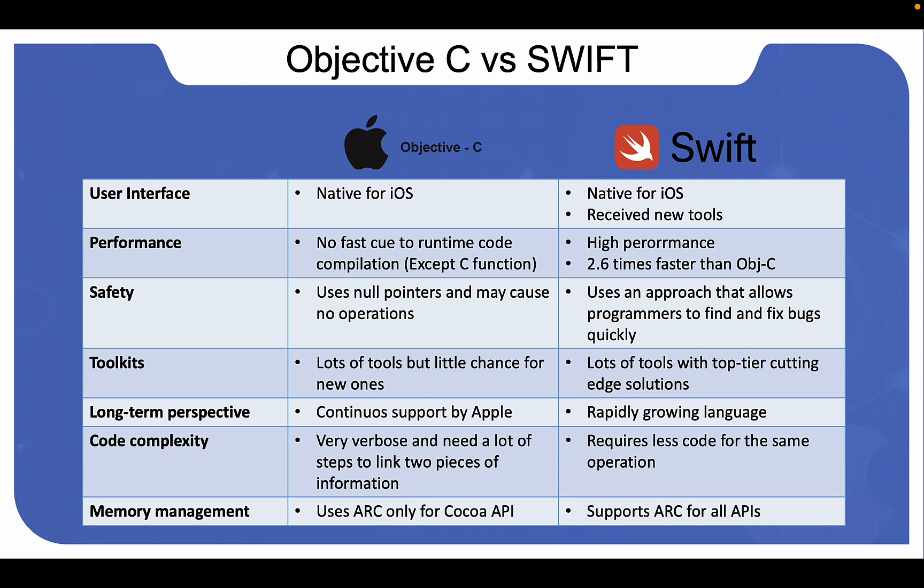From a performance perspective, Swift is 2.6 times faster than Objective-C because it has simpler syntax and performs type checking at compile time. In this dimension, the younger language clearly wins.